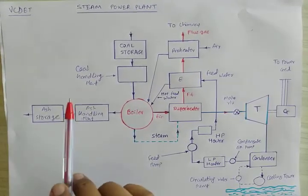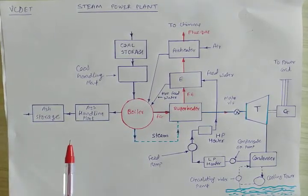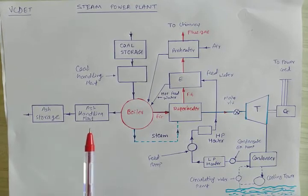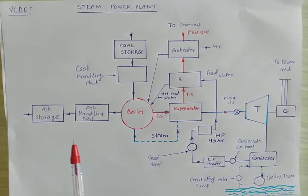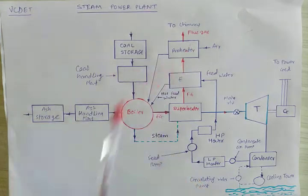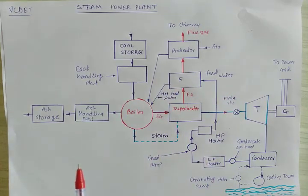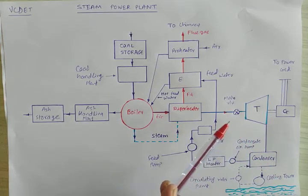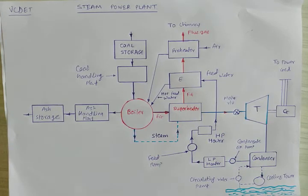The layout of the steam power plant is divided into four circuits. The first is the coal and ash circuit. The second is the air and gas circuit, involving the pre-heater. The third is the feed water and steam circuit. And the last one is the cooling water circuit, which includes the cooling tower. In this way, it is categorized into the four circuits.